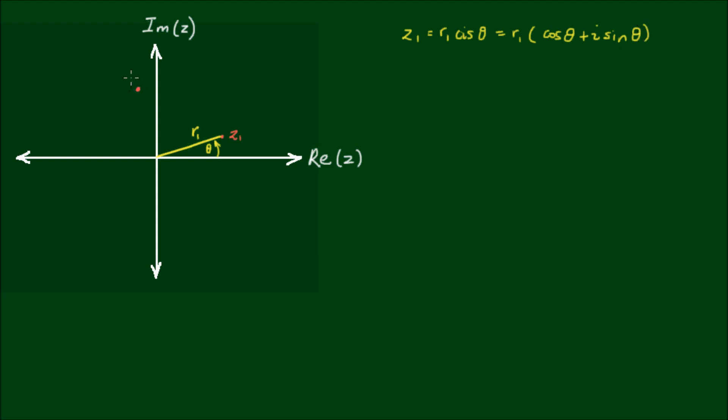Now here's another complex number z2, and its distance from the origin is r2, and its angle from the real axis is φ.